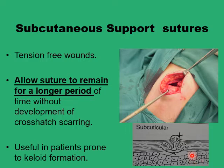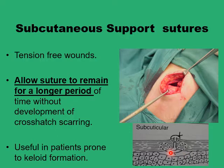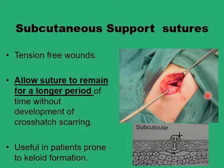Subcutaneous sutures in the deeper part of the dermis and the upper part of the subcutaneous space can obliterate dead spaces and provide enough support to the wound itself, as the subcuticular stitch does not offer too much wound support and does not resist tension well. Its main advantage is that by lying underneath the epidermis there is no cross-hatching scarring at the wound, and of course it's useful in patients prone to keloid formation.